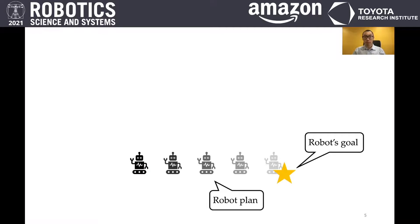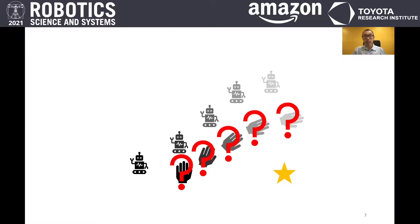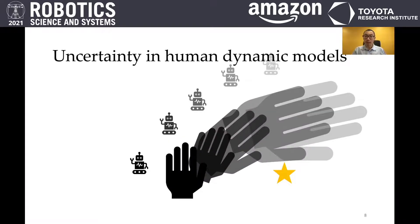Let's consider this running example. The robot is trying to find a plan to reach the goal. Human-aware motion planners define safety as collision avoidance. The robot first predicts human motions in the future and then avoids collision with the human. However, as motivated at the beginning of the talk, in most cases we don't have perfect human models. To ensure safety in such circumstances, we enable our system to quantify uncertainty in human dynamic models and have the robot avoid the entire uncertain region.